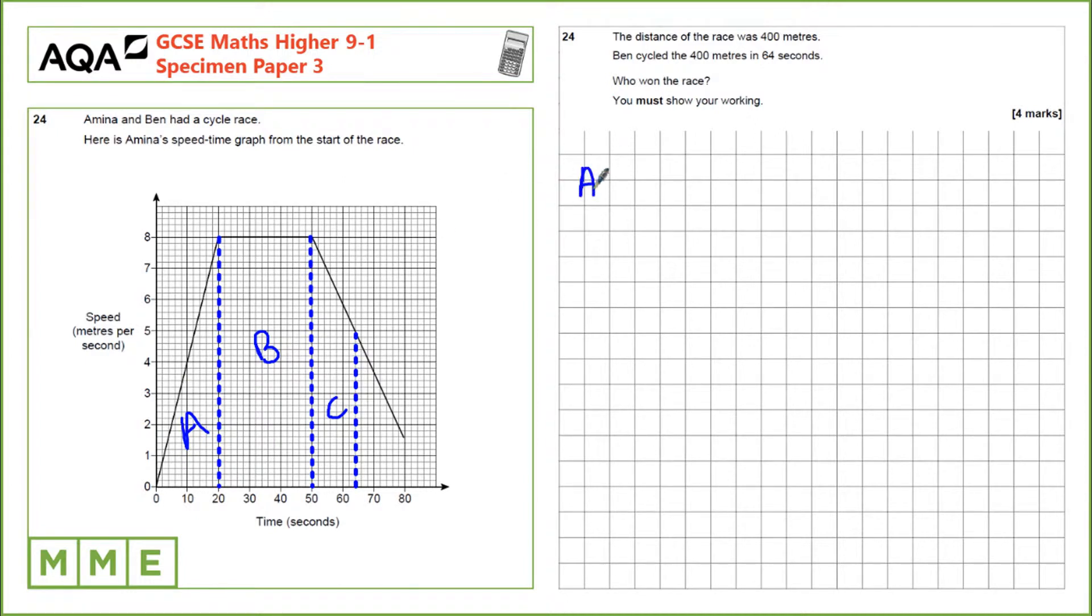So the area of A is the area of the triangle here. That's a half times the base length times the height, which is 20 times 5 divided by 2, which equals 8. That gives us 80 metres covered over this section.